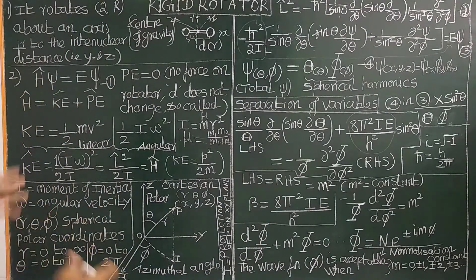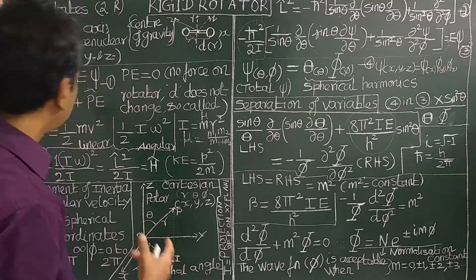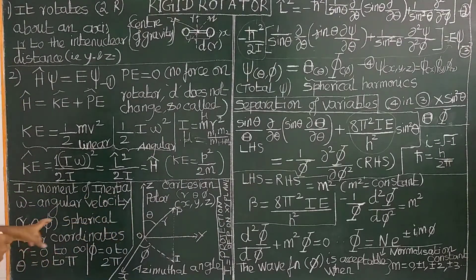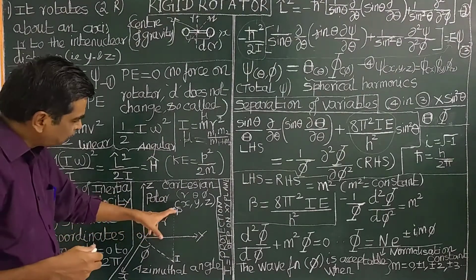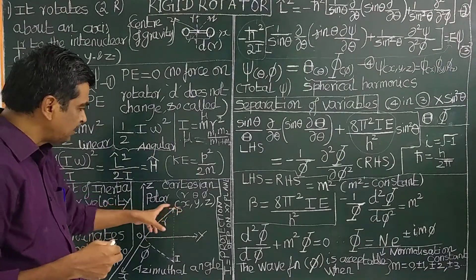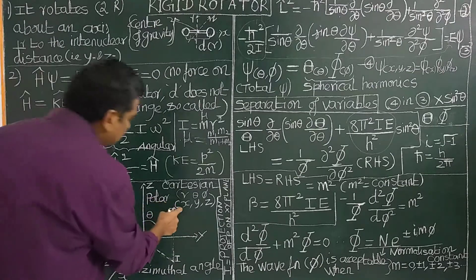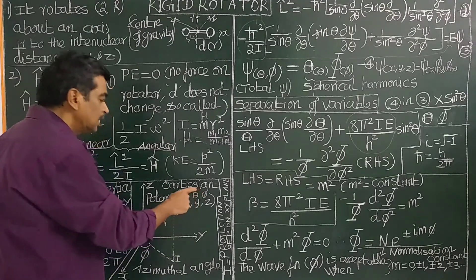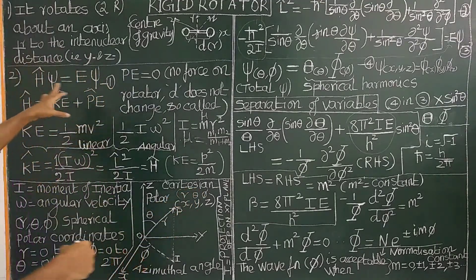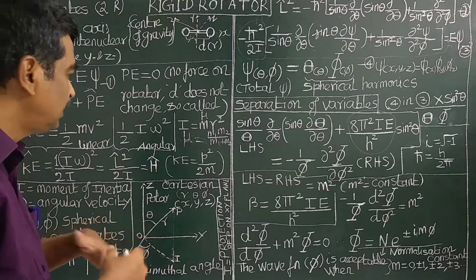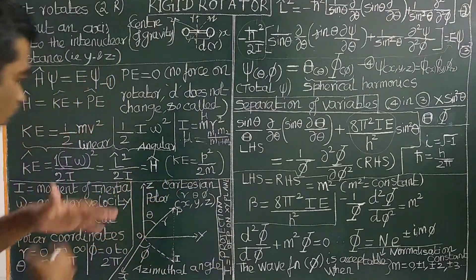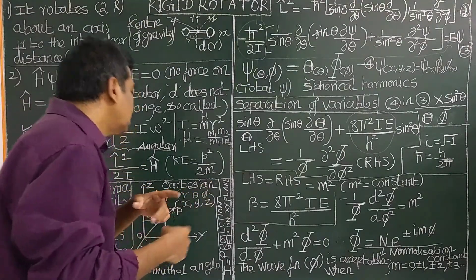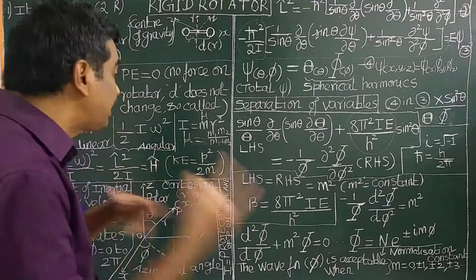Now, how do we solve the Hamiltonian and the Schrödinger wave equation? Here, I is the moment of inertia and omega is the angular velocity. The Schrödinger wave equation cannot be solved easily using Cartesian coordinates because it involves rotational motion. Therefore, we need to use angular motion — we need to use spherical polar coordinates.